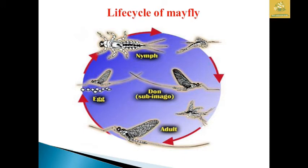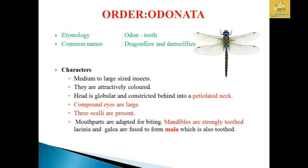You can see the life cycle of the mayfly where they go from egg to nymph, and the nymph undergoes three molts to form the adult. After that we are going to see about the order Odonata.